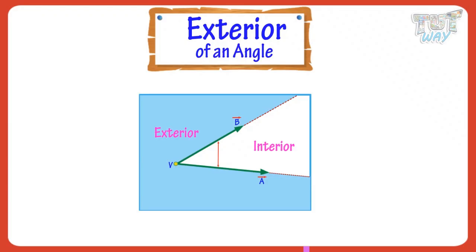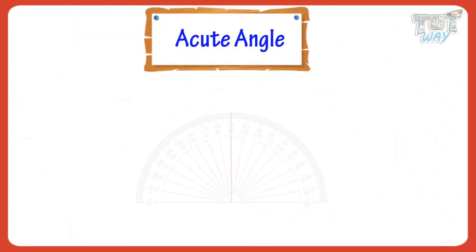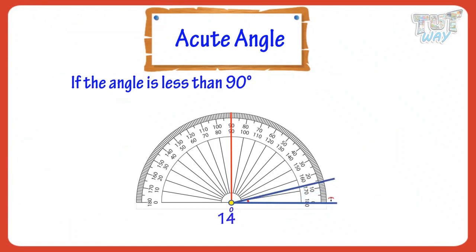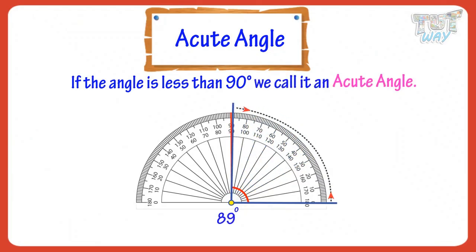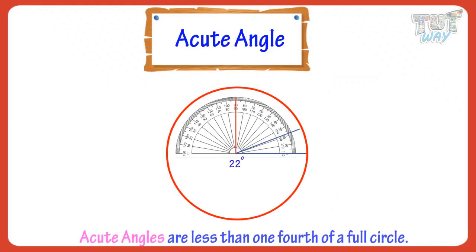Now let's learn types of angles. If the angle is less than 90 degrees, we call it an acute angle. So acute angles are less than one-fourth of a full circle.